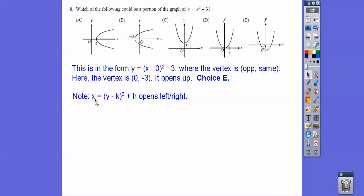Think opposite, same, so the vertex is at 0, negative 3, and it's opening up, you guys. So 0, negative 3, that's going to give us this guy right here. It's going to be opposite, same, so it's that one right there.